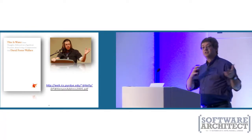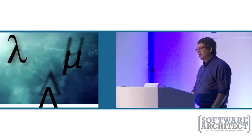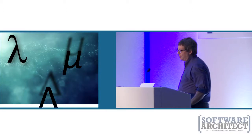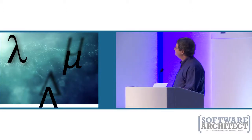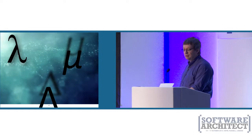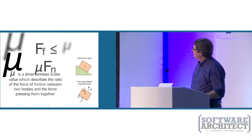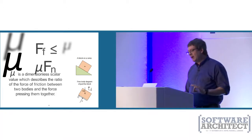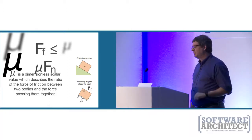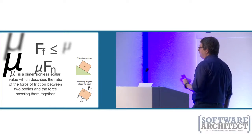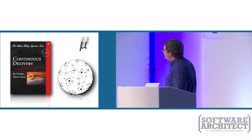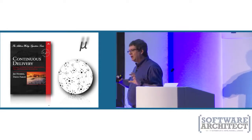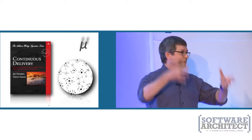I want to talk about some of those things in the technology world. I'm borrowing — or stealing — his metaphor and applying it to technology. I'm going to do so around these three Greek symbols. The first symbol I'm going to talk about is mu, which in mathematics is the constant of friction. In the software world, we don't think about friction from a physics standpoint — we think about friction in terms of what happens around engineering practices.